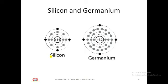Semiconducting devices commonly use silicon and germanium. Silicon has 14 orbiting electrons and germanium has 32 orbiting electrons. Both atoms have four electrons in their outermost shell.